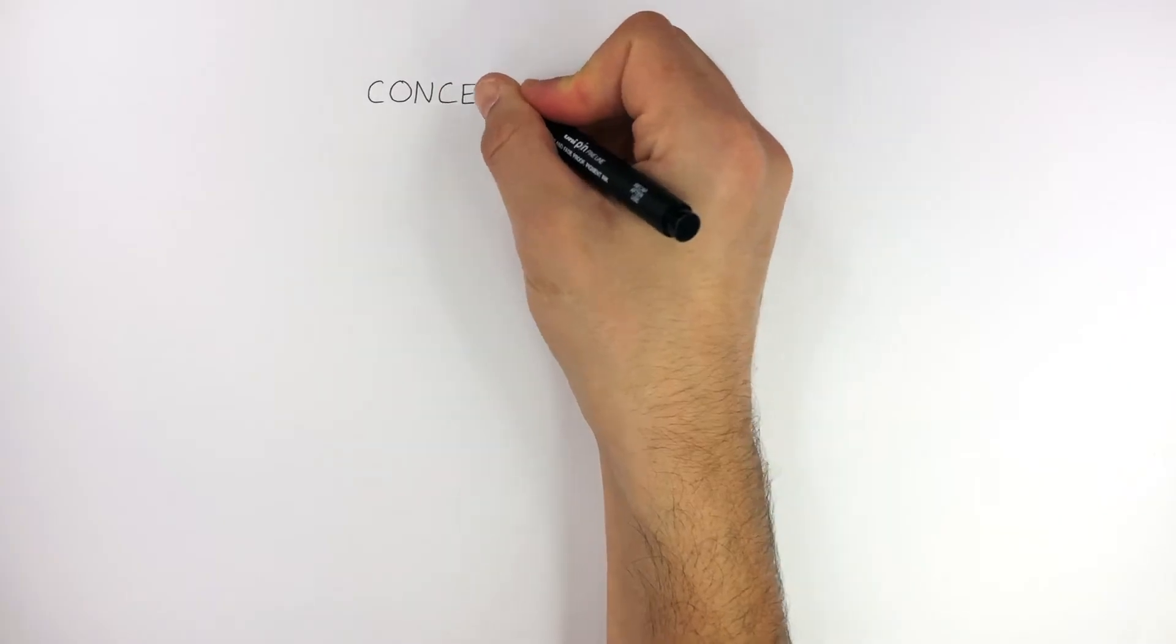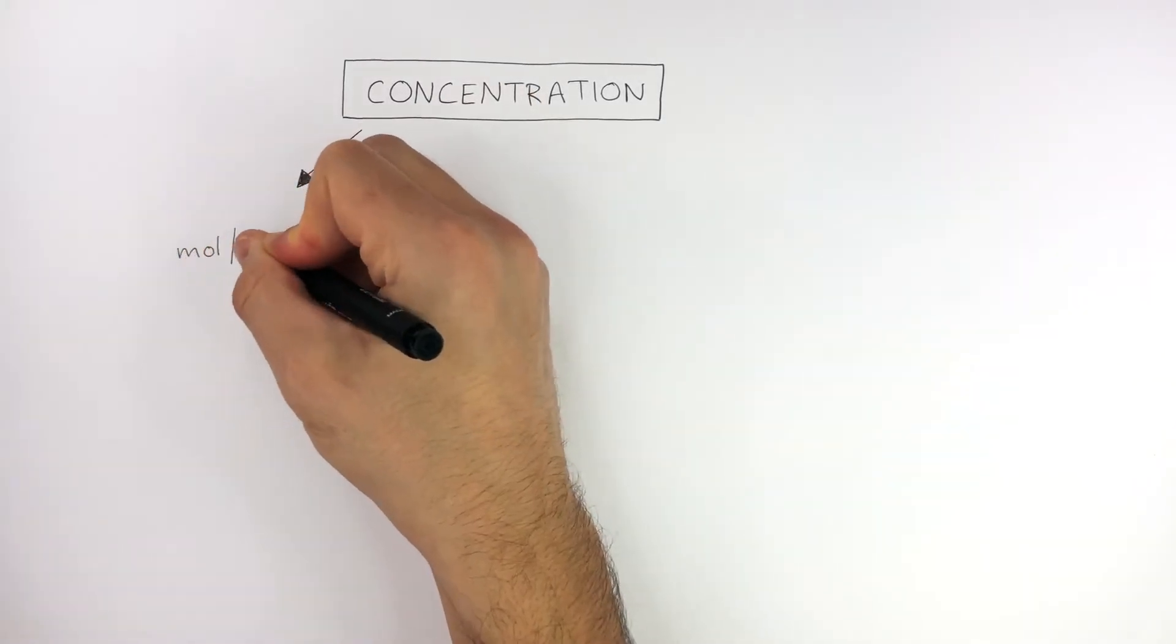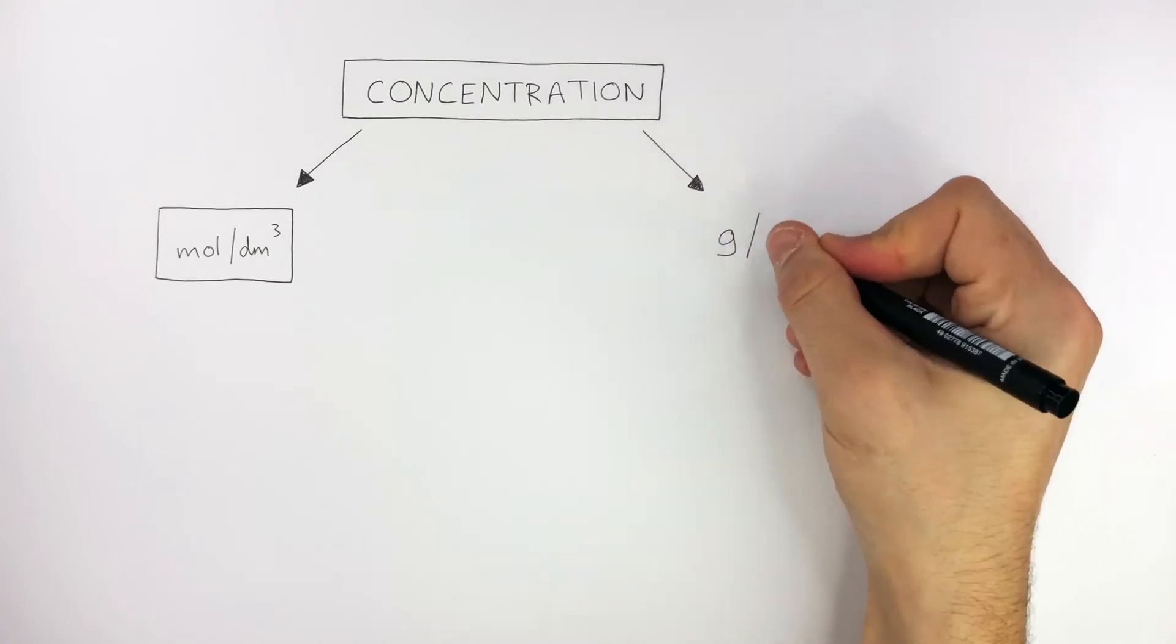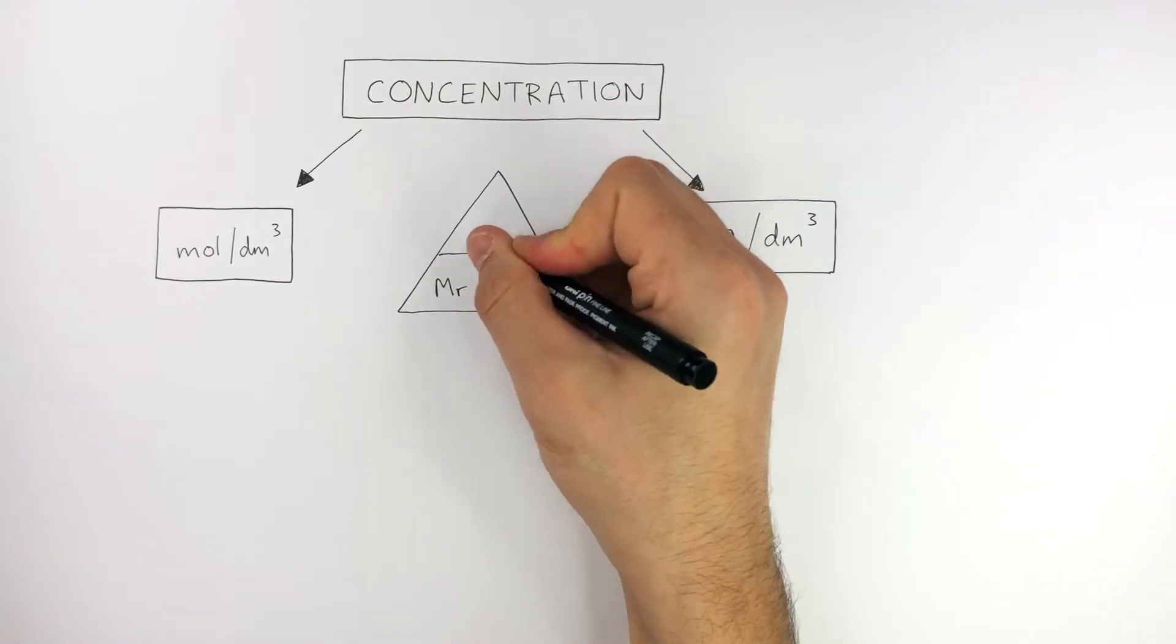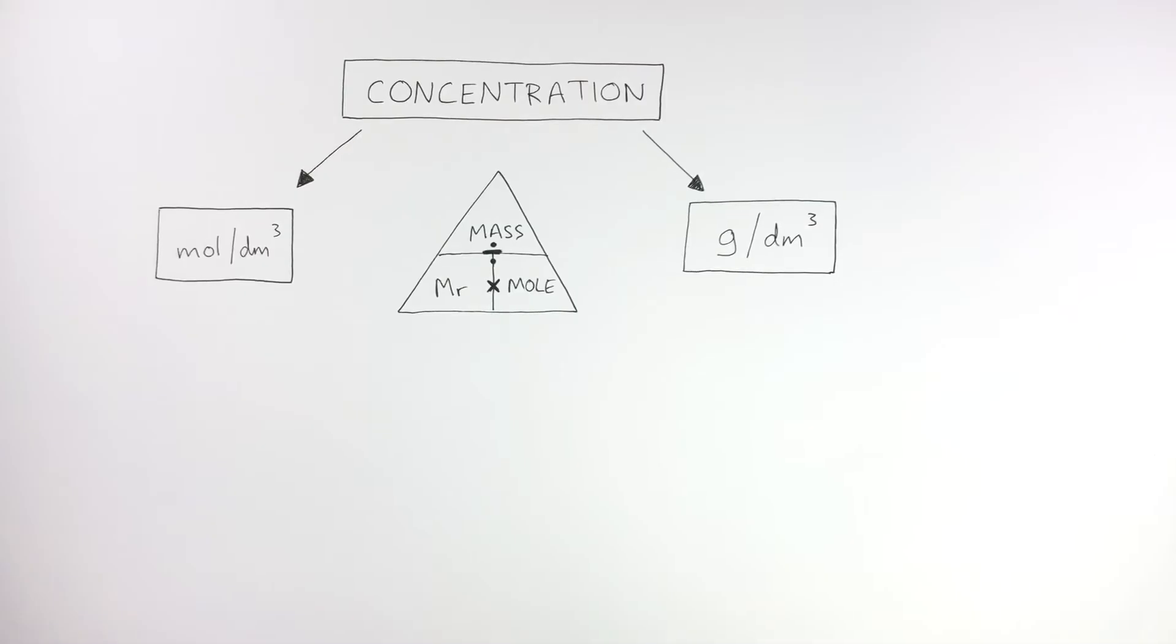There are two major types of concentration you need to know about. There's mole per decimeter cubed and grams per decimeter cubed. And we already know how this formula triangle connects mass, MR, and mole.